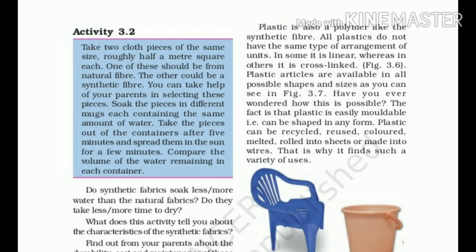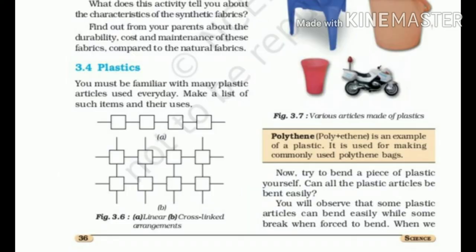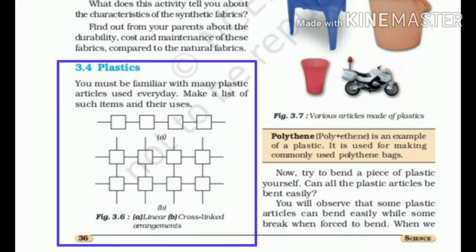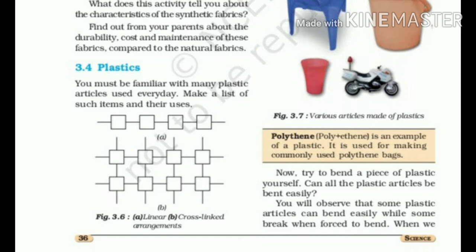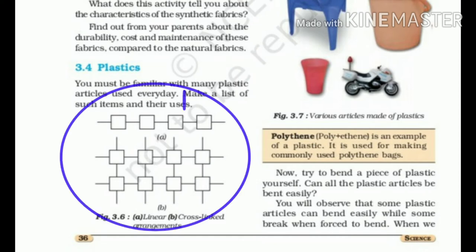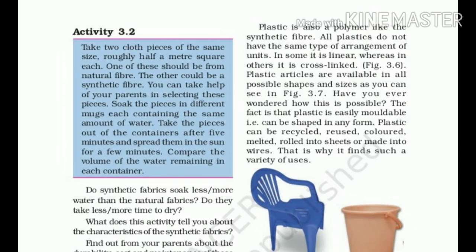We can say that synthetic cloth absorbs less water and dries faster. Next, plastics. In daily life, we use different types of plastics and articles made up of different types of plastics. Plastic is also a polymer like synthetic fiber. But all plastics are not of the same type as they are not arranged in a similar way. In some plastics the arrangement is linear, whereas in other plastics they are cross-linked.